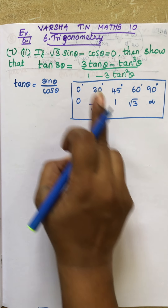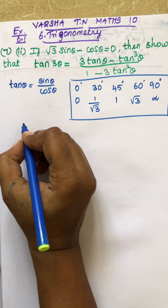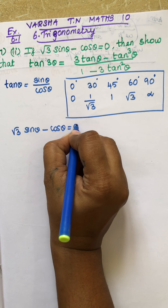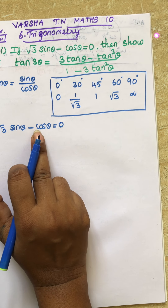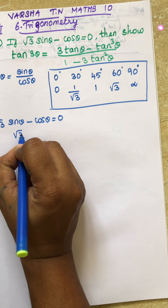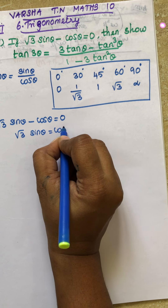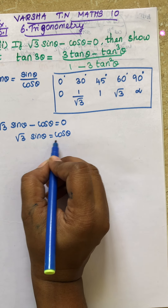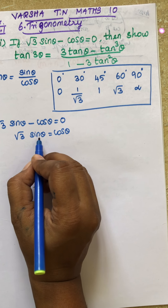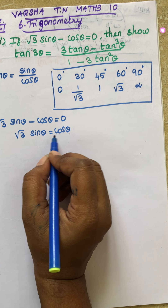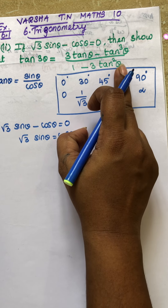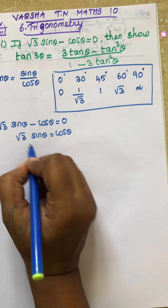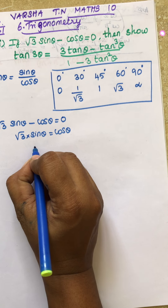Now, if we have been given the statement, we will derive what we need. So √3 sin θ minus cos θ equals 0. Cos θ is on the other side, so √3 sin θ equals cos θ. We now divide both sides by cos θ, bringing root 3 to the division side, giving us sin by cos.